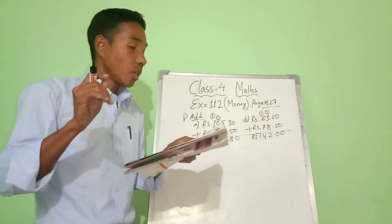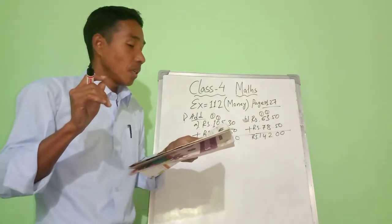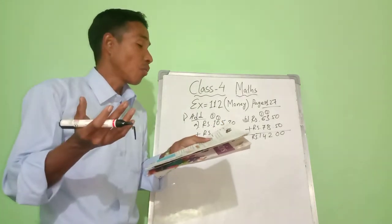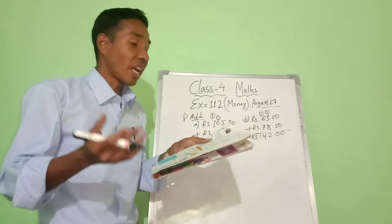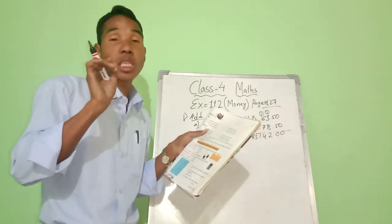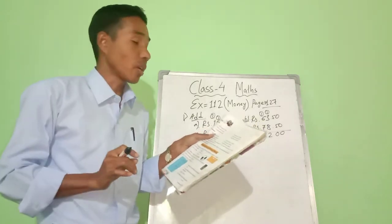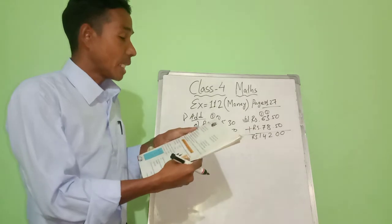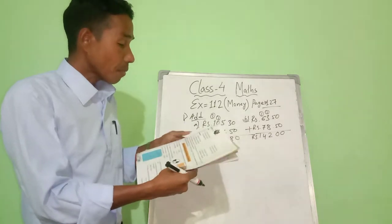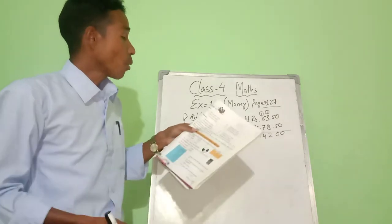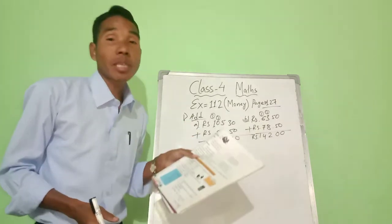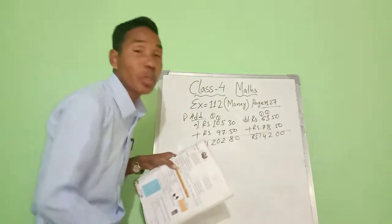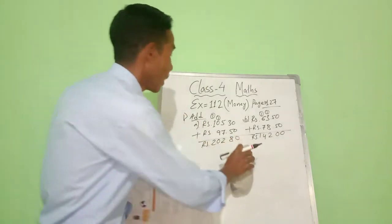Have you understood? If you have understood, try to do from number c to f by yourself in your notebook — that is your homework. It's very easy. Now I'm going to show you number two about subtraction. Subtraction means to deduct.